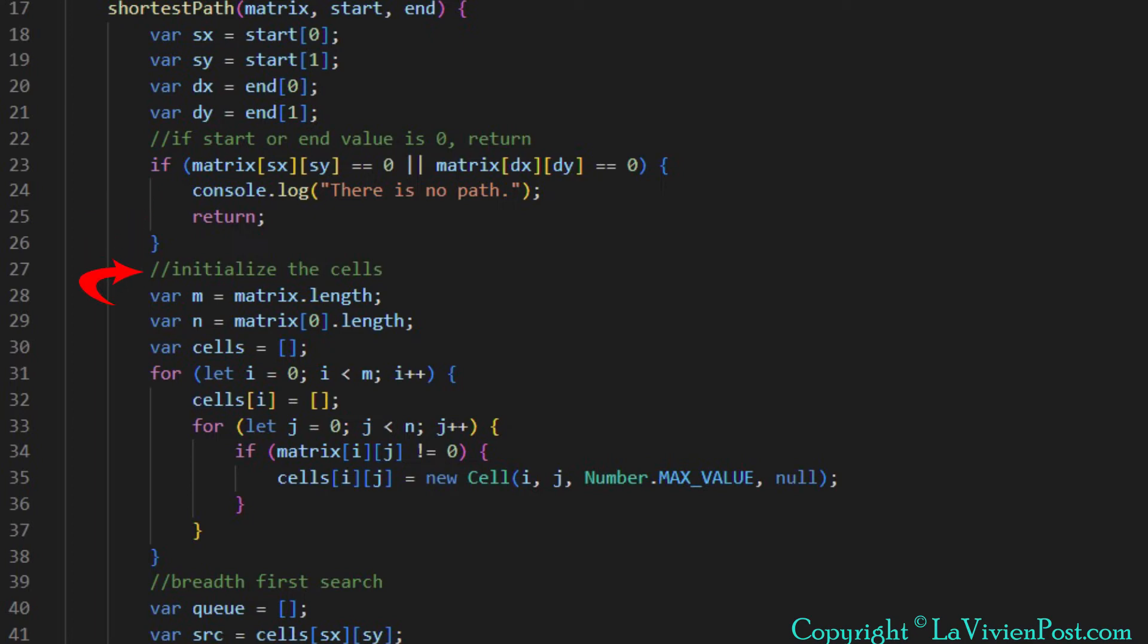Next is to define a two-dimensional array, cells, to keep track the cell's visiting status. It functions the same as the two-dimensional boolean array visited in DFS and stores more information. We initialize each cell with row number, column number. The distance initial value is integer's max value.